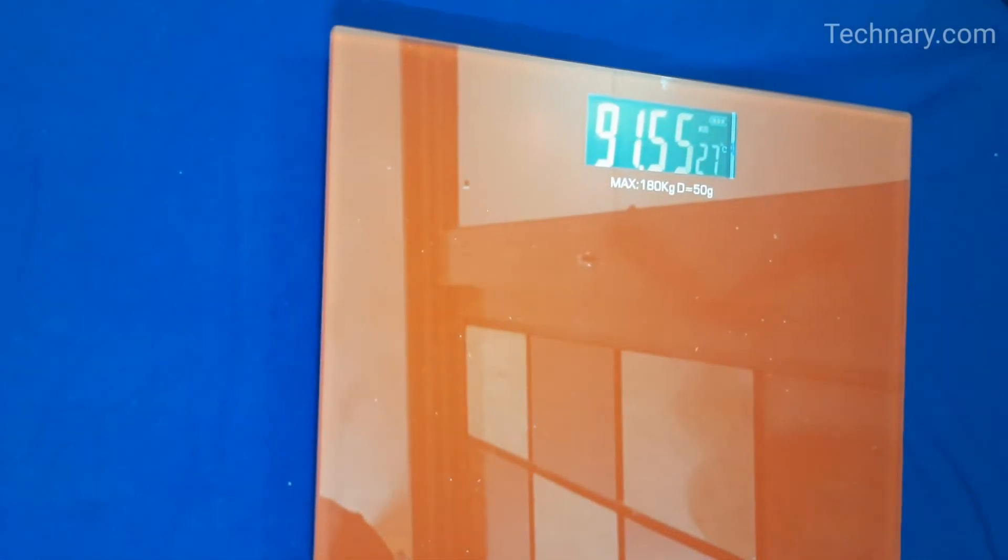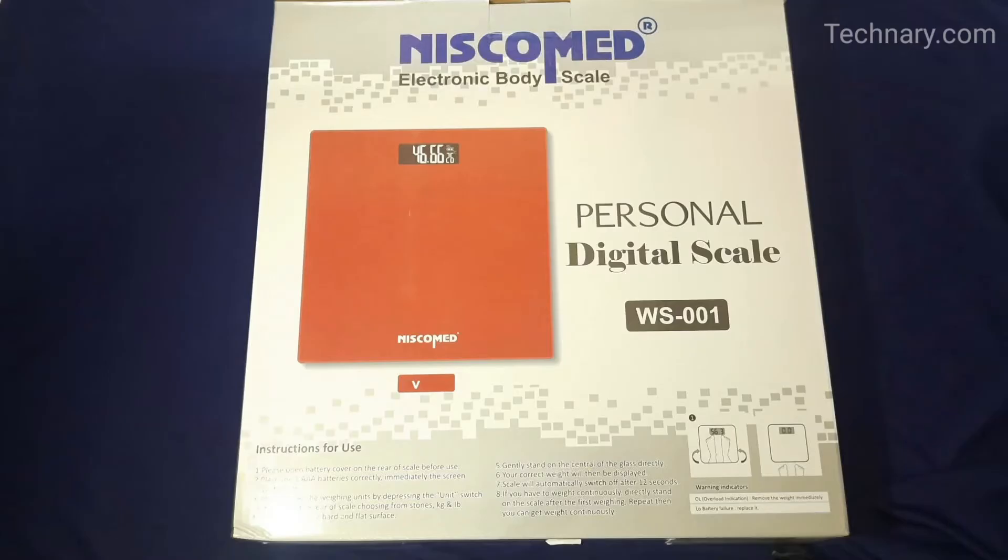It's showing my weight which is 91.55 kg. With this scale it's very convenient to check my weight at any time. If you are looking for a good electronic body scale then you must buy this Niscomed personal digital scale and its model name is WS-001.